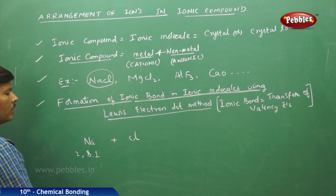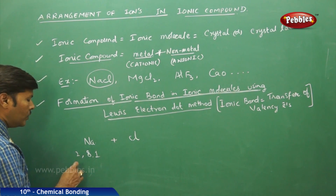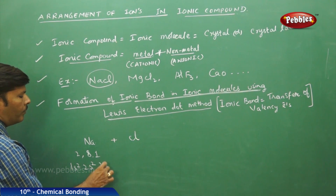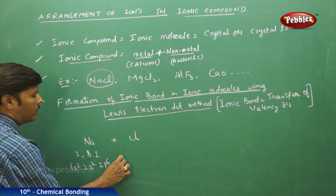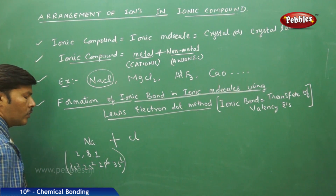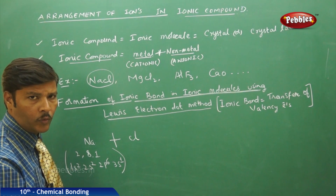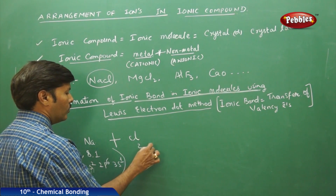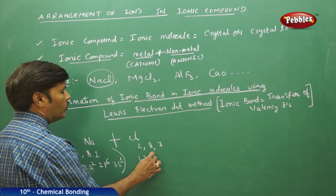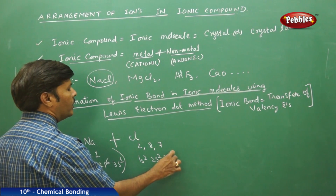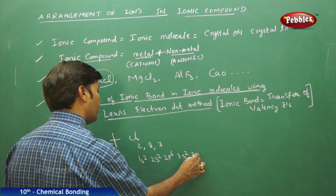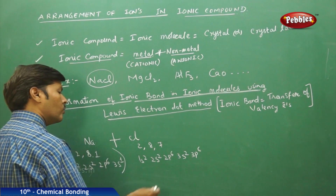Taking sodium: the electronic arrangement is 2, 8, 1 and the electronic configuration is 1s² 2s² 2p⁶ 3s¹. For chlorine, the electronic arrangement is 2, 8, 7 and the electronic configuration is 1s² 2s² 2p⁶ 3s² 3p⁵.